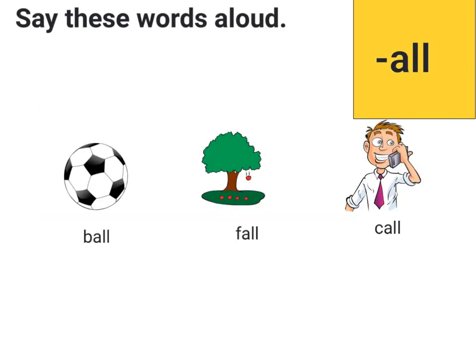Now let's say these words aloud: ball, fall, call. All these words end with '-all' and they all belong to the '-all' family. Let's say the words again and look at their pictures. Ball — we use a ball to play. Fall — in this picture, the apple is falling. Call — in this picture, the man is calling. Let's say the words one more time: ball, fall, call.